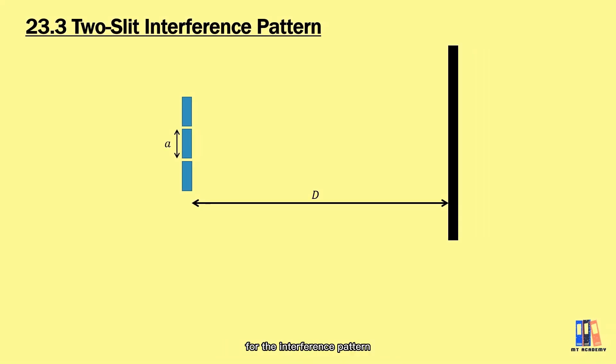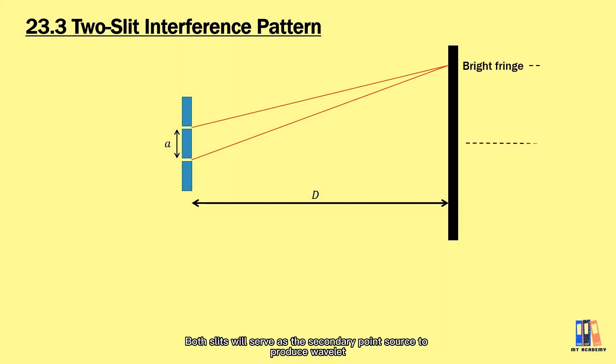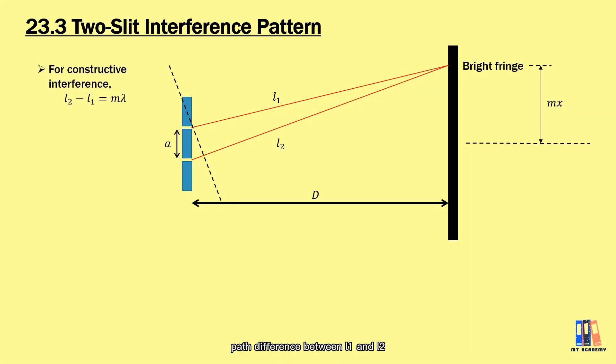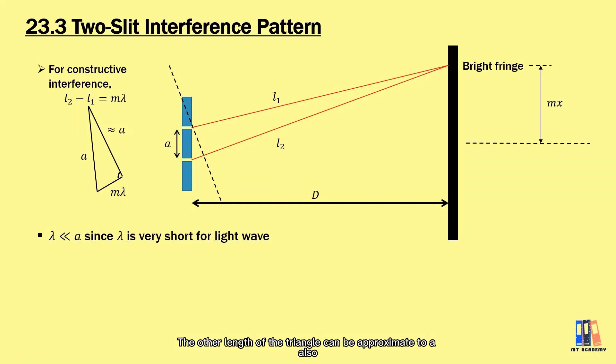Now we move to the derivation of the formula for the interference pattern. Let's say we have two slits with separation of a and another screen at distance D away from the slit. Both slits will serve as secondary point sources to produce wavelets and undergo superposition to produce the superposition pattern on the screen. Let's consider any of the bright fringes on the screen. The distance of bright fringe from the center of the screen equals mx, where m is the order of maximum. To have constructive interference, the path difference between L1 and L2 should be a multiple of wavelength mλ. From here, you can draw a triangle which is almost similar as a right angle triangle. This is because the wavelength of light is very short in the range of nanometer, so the other length in the triangle can be approximated to a also, and we have almost a 90 degree triangle.